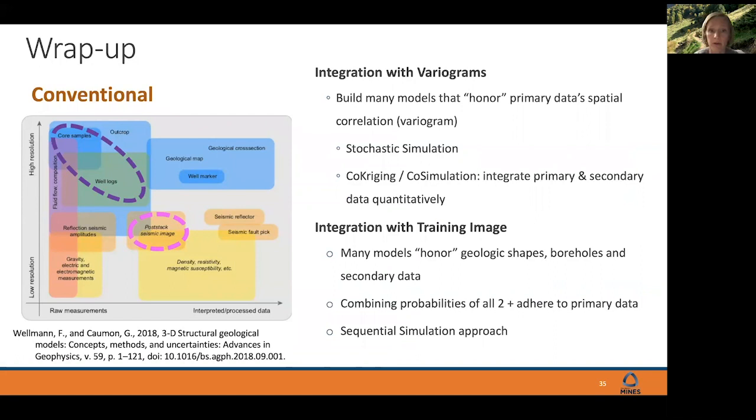You're able to freeze all the locations of your primary data. In this case, it was lithology information at the well locations and then produce many different models that are adhering to that training image plus your primary data. We can suppose that we have some resistivity information. What's the most important step is to have some kind of relationship connecting that resistivity to the lithology that you're trying to actually simulate.